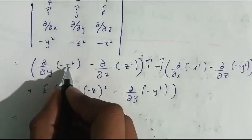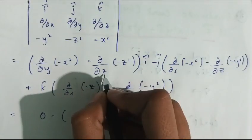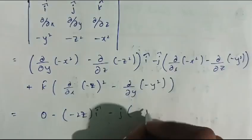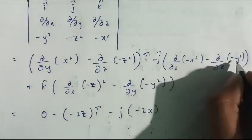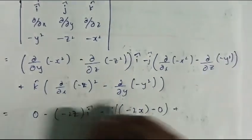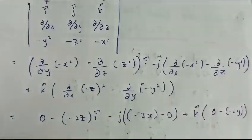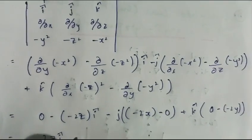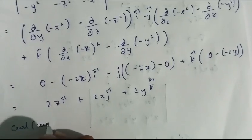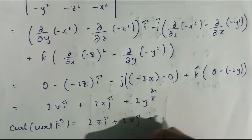Evaluating each term: differentiation of x² with respect to y is 0; differentiation of -z² with respect to z is -2z, so î term gives 0 - (-(-2z)) = 2z. For ĵ: -(-2x) - 0 = 2x. For k̂: 0 - (-2y) = 2y. Therefore, curl of curl f = 2zî + 2xĵ + 2yk̂.